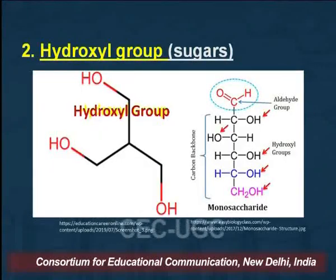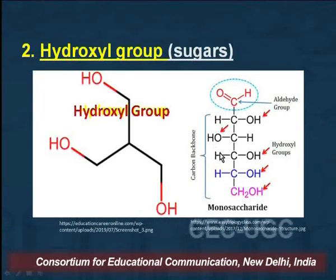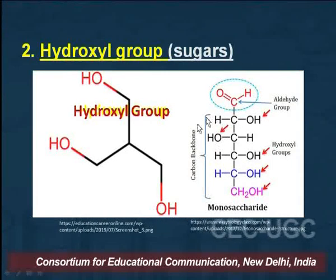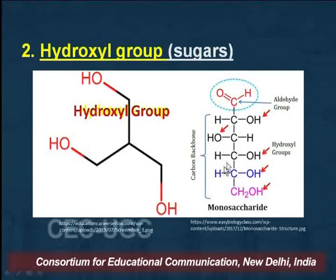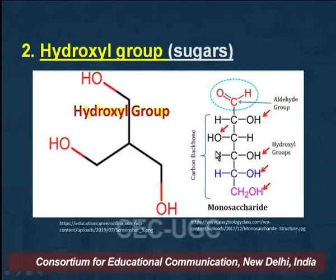The second group present in biomolecules is the hydroxyl group. As we can see, this monosaccharide — which is an example of glucose — has five hydroxyl groups in it. These hydroxyl groups modify the properties of sugars; because of them, sugar molecules are highly soluble in water. Glucose is highly soluble in water because it is able to form intermolecular hydrogen bonding with water.